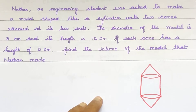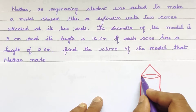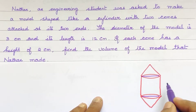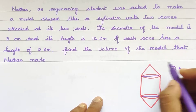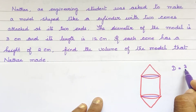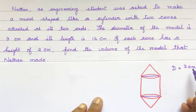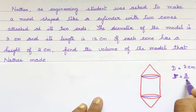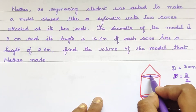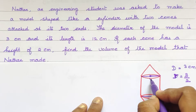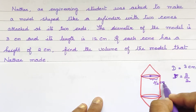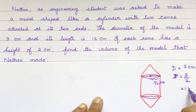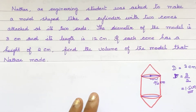For this model, the diameter is equal to 3 cm. Since we need the radius, we divide the diameter by 2. So the radius is 3 by 2, which equals 1.5 cm.